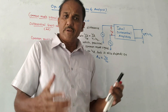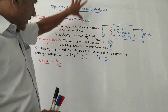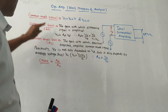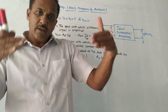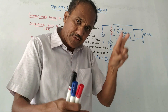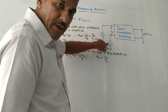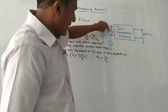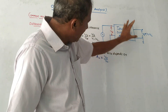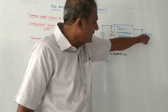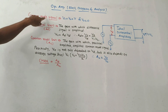Now we will solve numericals based on AC and DC analysis of op-amp. First, let us brush up some terms required for the numericals. This is the block diagram of an ideal differential amplifier — it amplifies the difference between two input signals. Two input signals V1 and V2 are used; the difference between them is Vd. So Vd is V1 minus V2, and V0 is directly proportional to V1 minus V2.